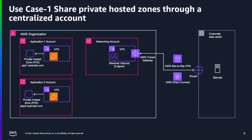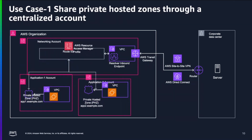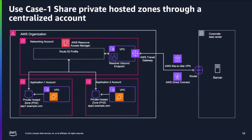With Route 53 profiles, you don't need to use the CLI. You can create a Route 53 profile and associate your networking VPC with this profile. Then you can share this profile using AWS RAM across your organization or specific accounts. Once shared, the profile is available in your application one and application two accounts, and you can associate those private hosted zones with the Route 53 profile. The Route 53 profile in the networking account is now linked to the VPC and to the private hosted zones in both application accounts, so the resolver inbound endpoint has access to both, and any query from the on-premises data center can resolve DNS names via this resolver inbound endpoint.